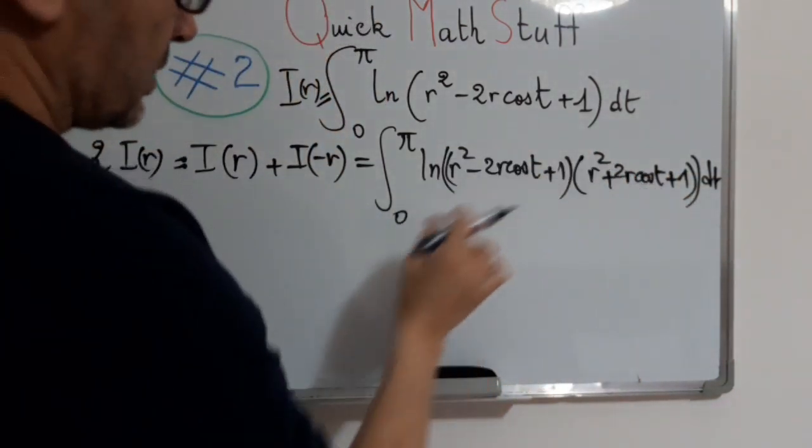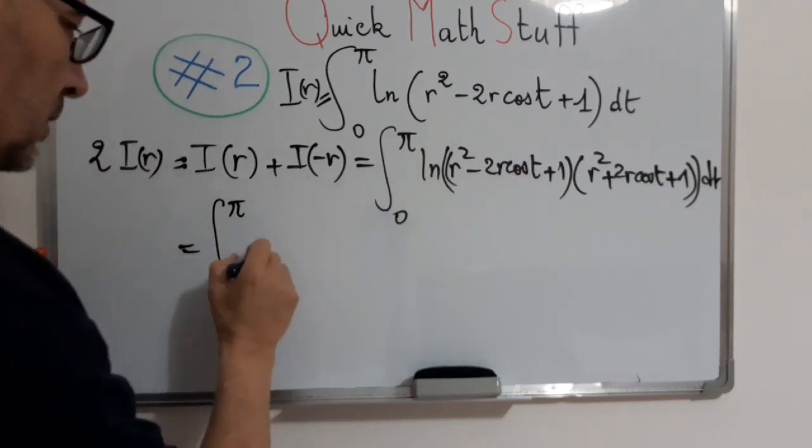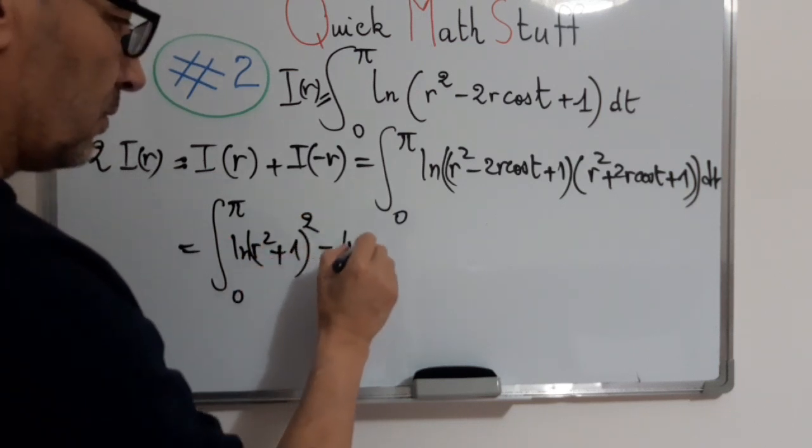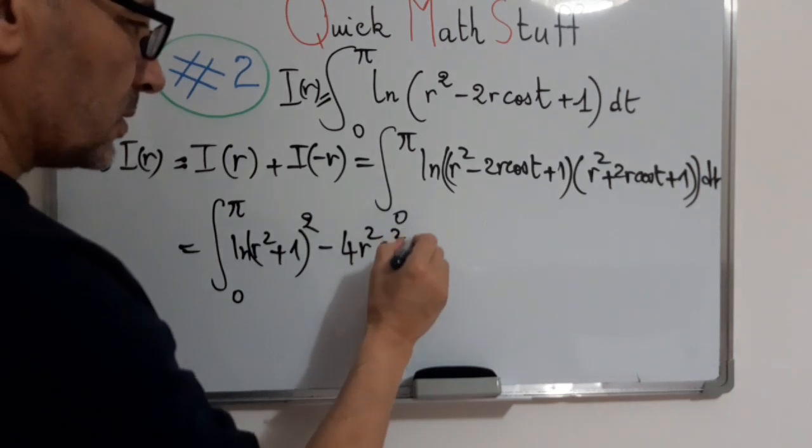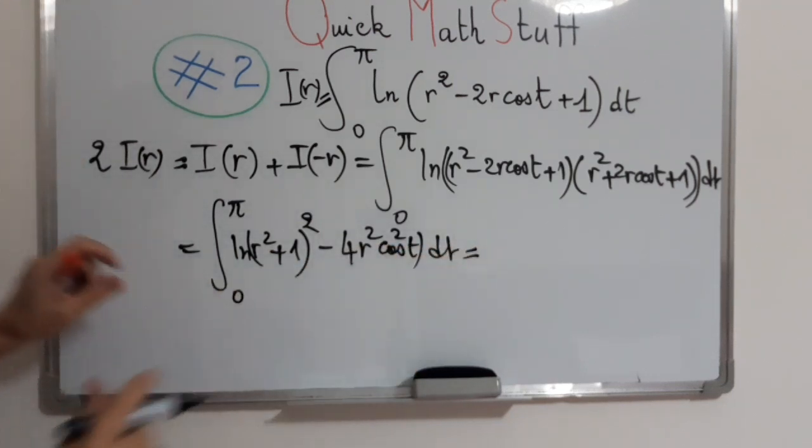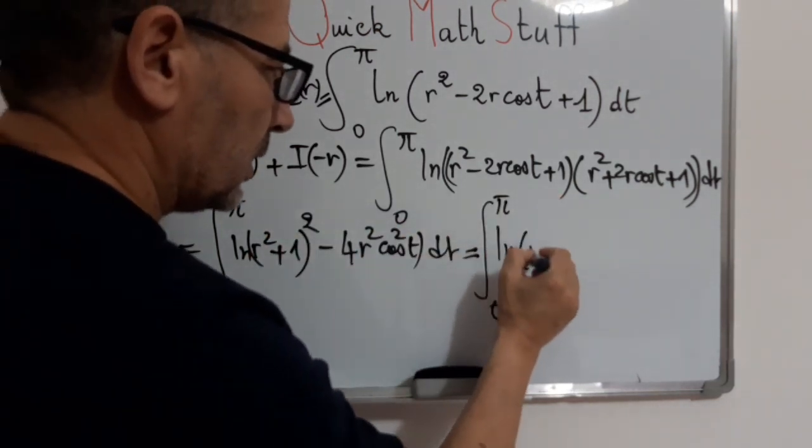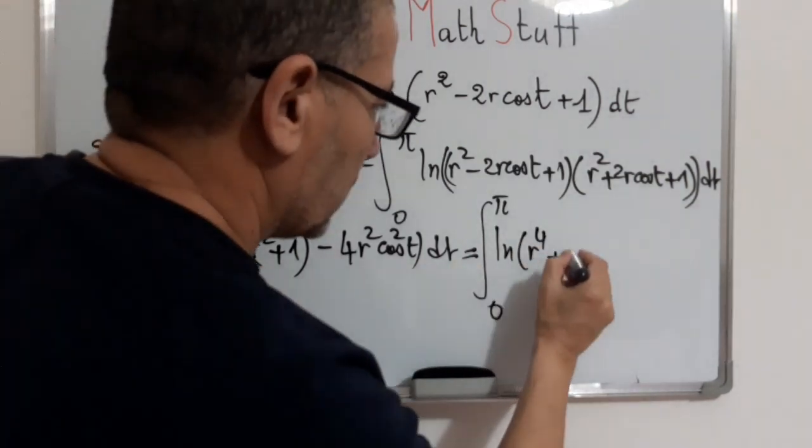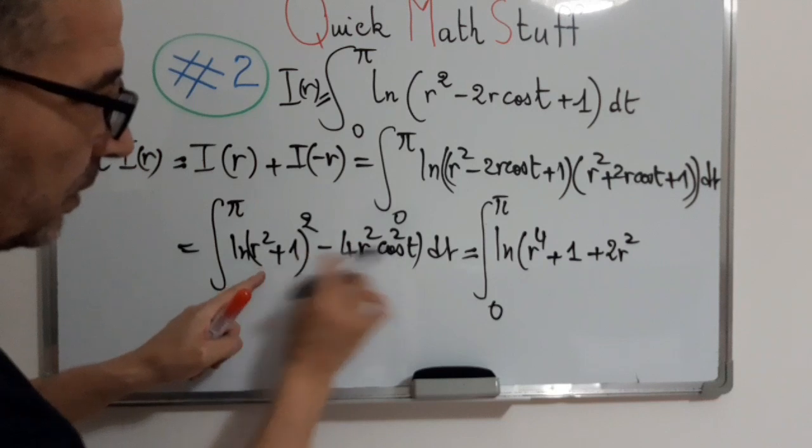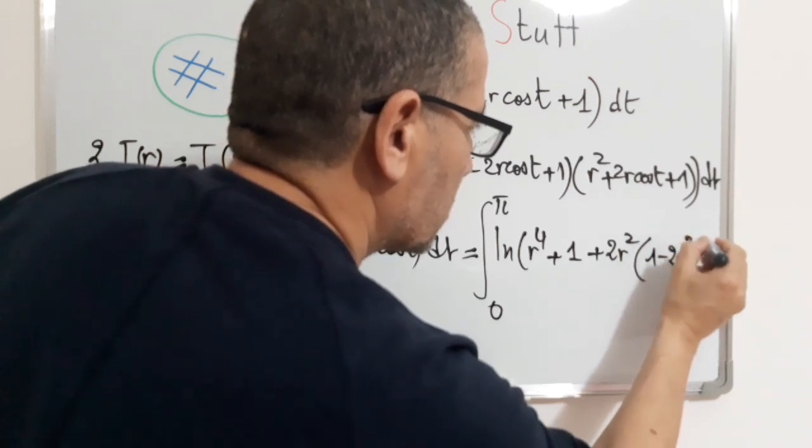Now we expand the product. We obtain integral from 0 to π of ln of r squared plus 1 squared minus 4r squared cosine squared t dt. And this will equal integral from 0 to π of ln of r to the fourth plus 1 plus 2r squared, we factor here by 2r squared,